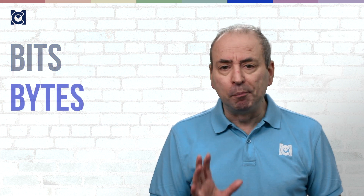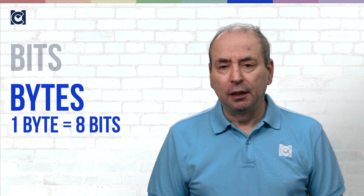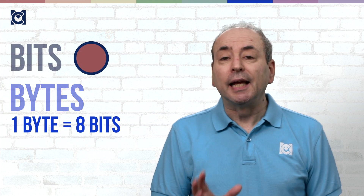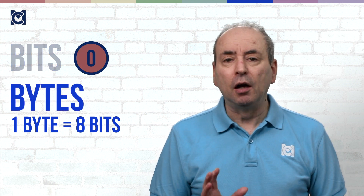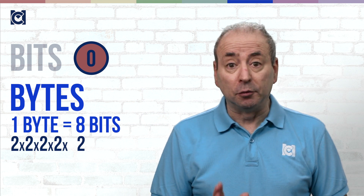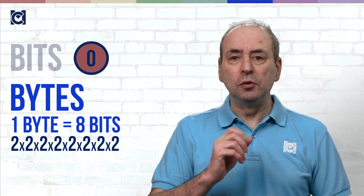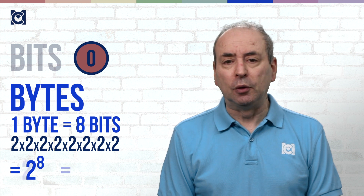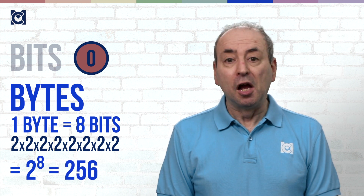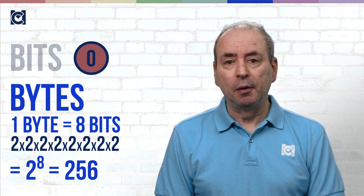The next thing we need to understand is data. Data comes in bits and bytes. A bit is a single unit of information, but we more often work in terms of bytes. A byte is 8 bits — 8 units of information. Since a bit can represent 2 possibilities, on or off, 1 or 0, then a byte can code for 2 to the power of 8 possibilities. And 2 to the power of 8 is 256. A byte can code for 256 different possible configurations.